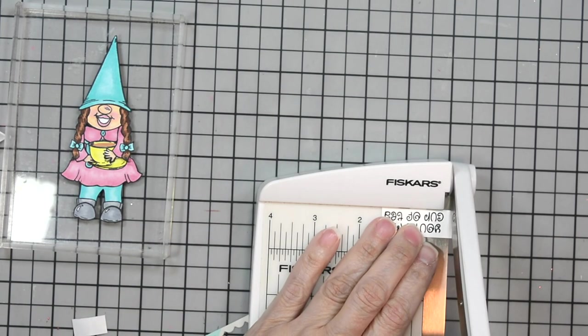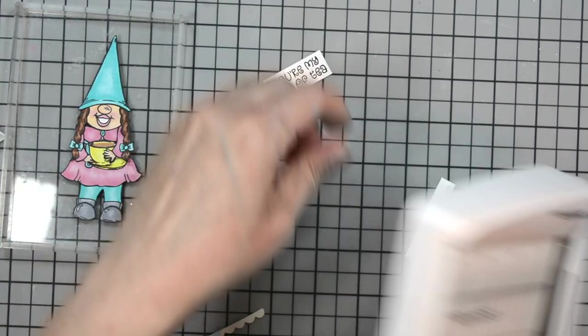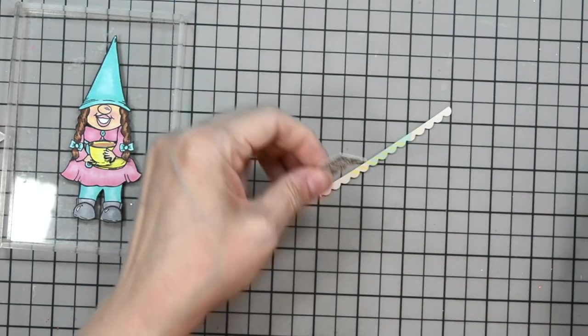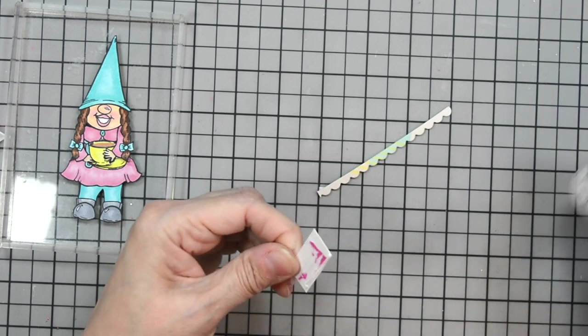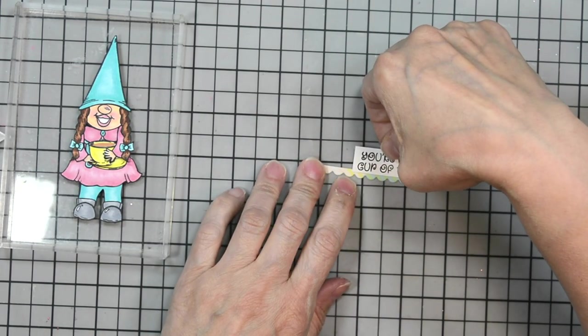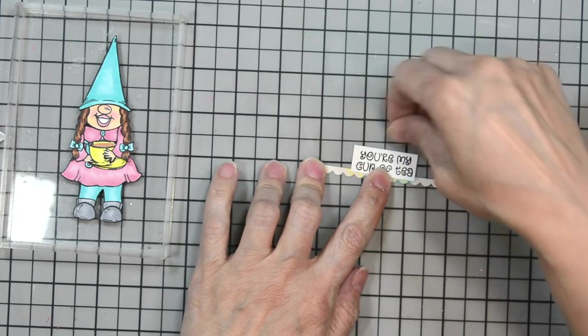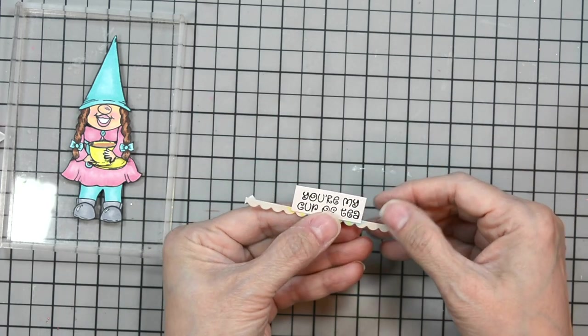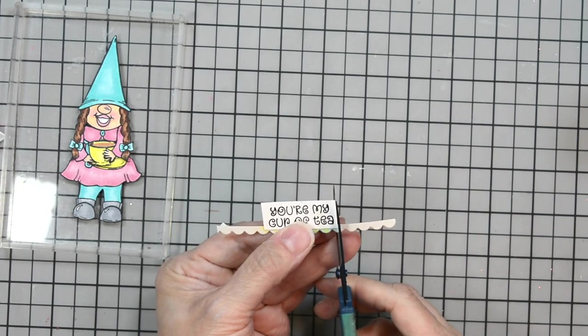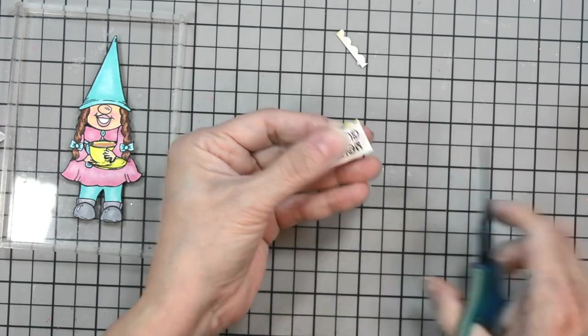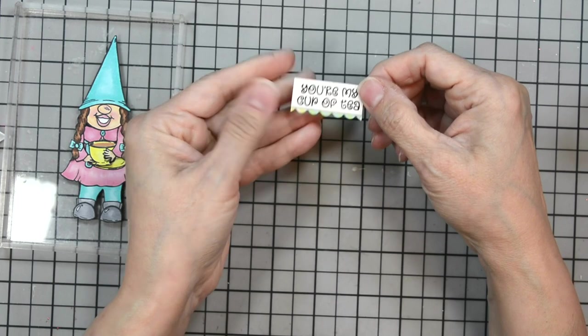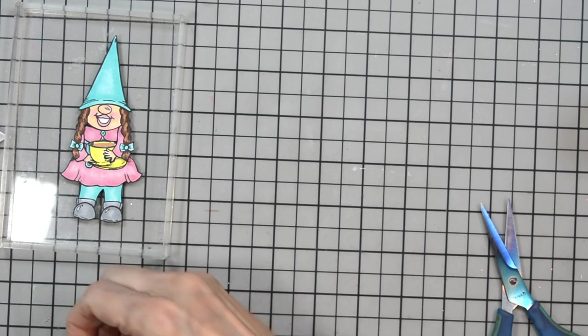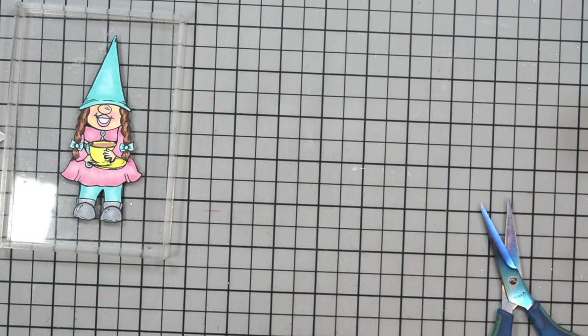When I die cut my scallop panel, the blue panel, I used that same die to die cut my patterned paper, so I ended up with all these little scallops which I trimmed off. I saved them—one for the inside of the card and one for the bottom of my sentiment—just to bring that scallop throughout the card.